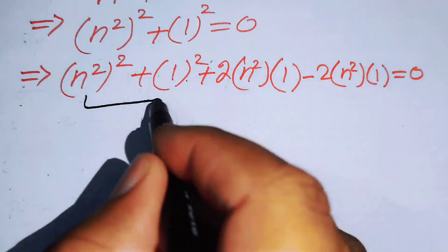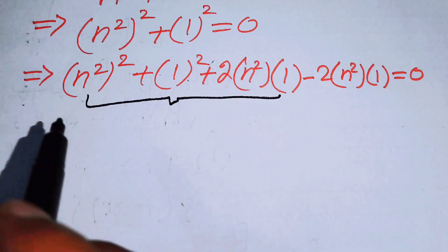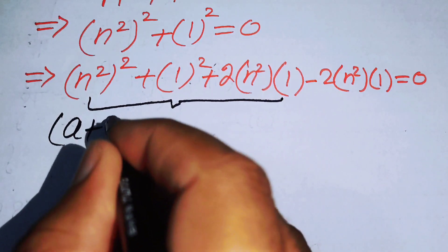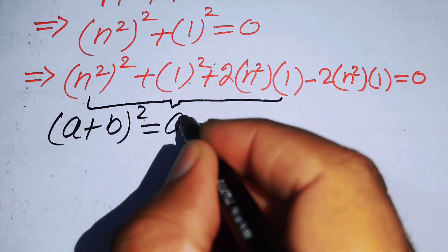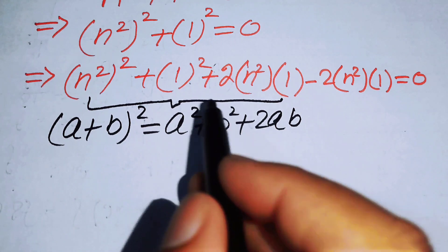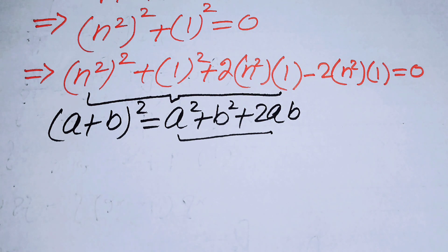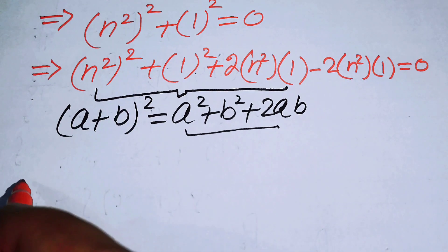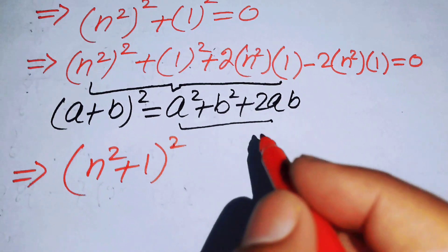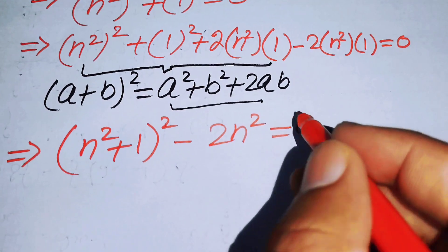Focusing on this expression, we see it matches the formula a² + b² + 2ab, which equals (a + b)². So we can combine these terms to get (n² + 1)², and then we have the subtracted term, giving us (n² + 1)² − 2n² = 0.